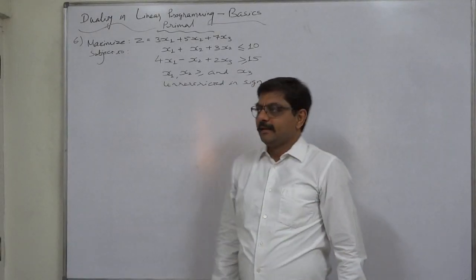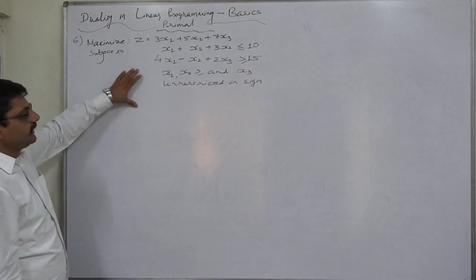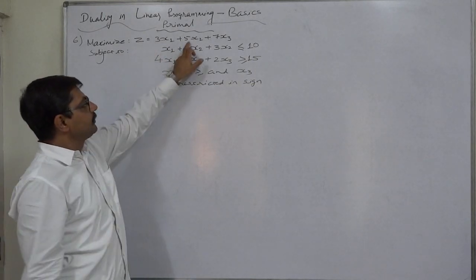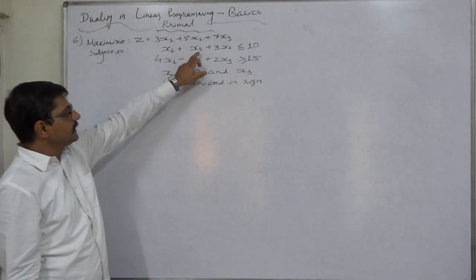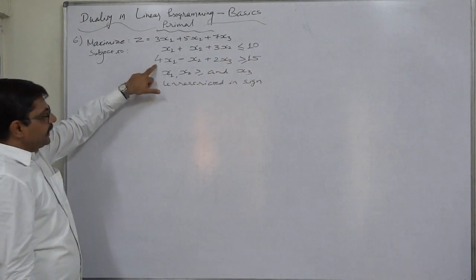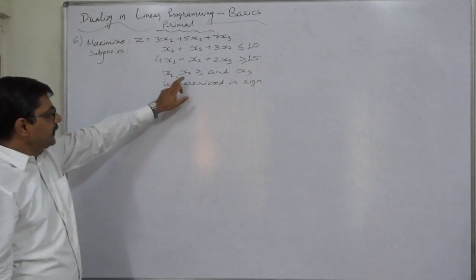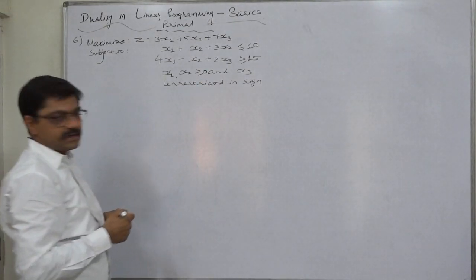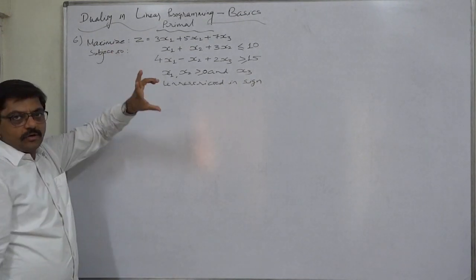Hello, welcome. I am again with you with a new case of duality in linear programming. The problem is: maximize z equals 3x1 plus 5x2 plus 7x3, subject to the constraints x1 plus x2 plus 3x3 less than or equal to 10, and 4x1 minus x2 plus 2x3 greater than or equal to 15. x1 and x2 are non-negative and x3 is unrestricted in sign.